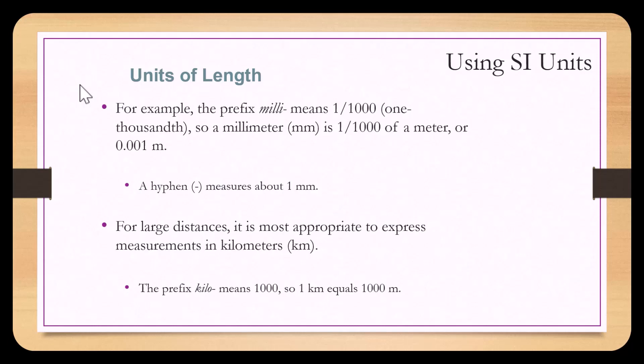A hyphen width is about one millimeter. For large distances, it is most appropriate to express measurements in kilometers, denoted as km. The prefix kilo means one thousand, so one kilometer equals one thousand meters.